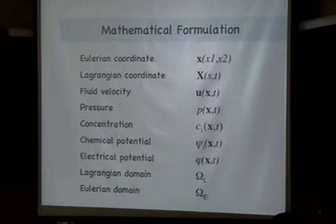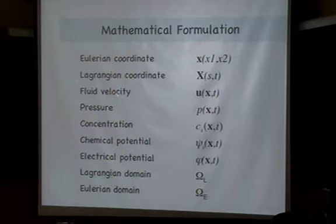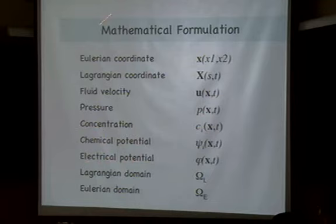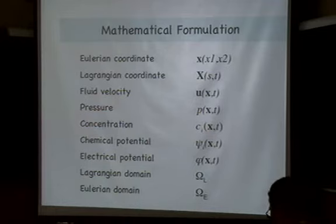We then focus on numerical discretization for solving these problems. The main variables stay on the Eulerian coordinate — for example, fluid velocity, pressure, solute and ionic concentration, chemical potential, and electrical potential are all defined on the Eulerian coordinate. The Lagrangian coordinate is used for the structural description, specifically the membrane position. The Lagrangian and Eulerian domains interact together.